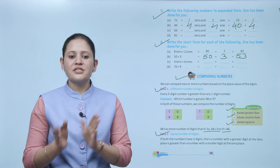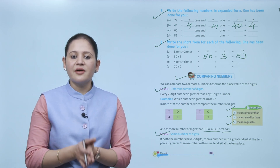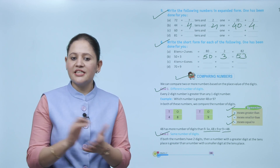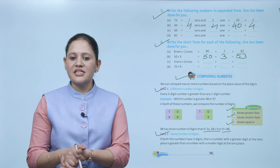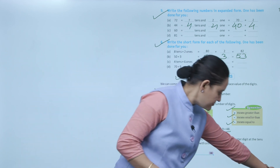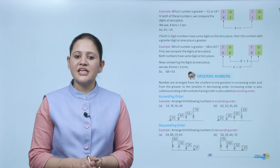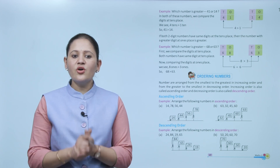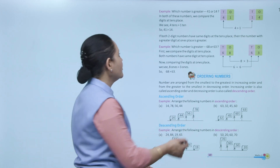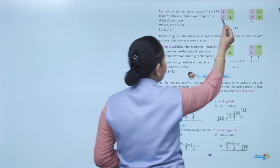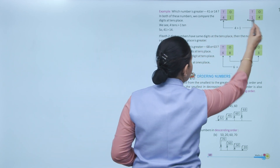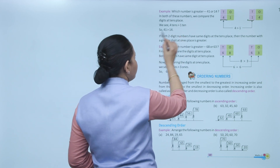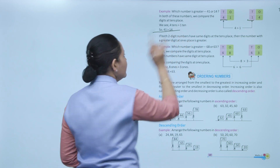Case 2 — same number of digits: if both numbers have two digits, the number with the greater digit at the tens place is greater. For example, which is greater — 41 or 14? Both are two-digit numbers, so compare the digit at the tens place: 4 versus 1. Since 4 is greater than 1, four tens is greater than one ten, so 41 is greater than 14.